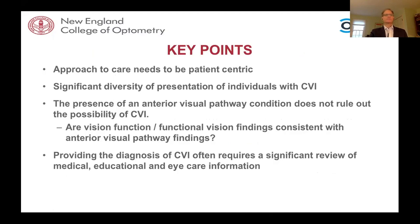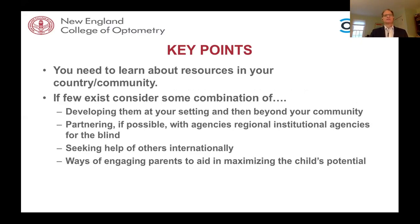Key points: approach to care needs to be patient-centric and parent-centric. There is significant diversity of presentation in individuals with cerebral visual impairment. The presence of an anterior visual pathway condition does not rule out CVI. Providing a CVI diagnosis often requires significant review of medical, educational, and eye care information. Learn about resources in your country and community — if few exist, consider developing them at your setting, partnering with agencies and institutions for the blind, seeking international help, and finding ways to engage parents to maximize the child's potential.